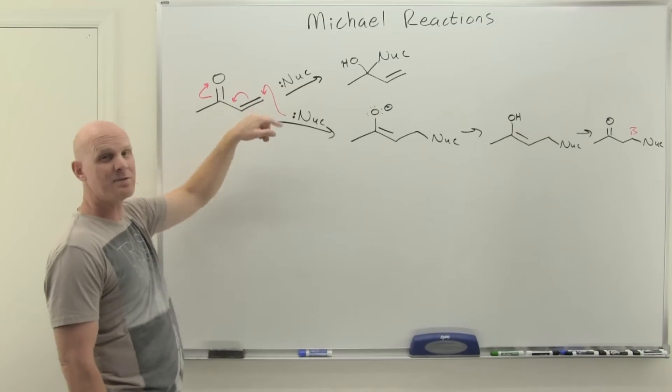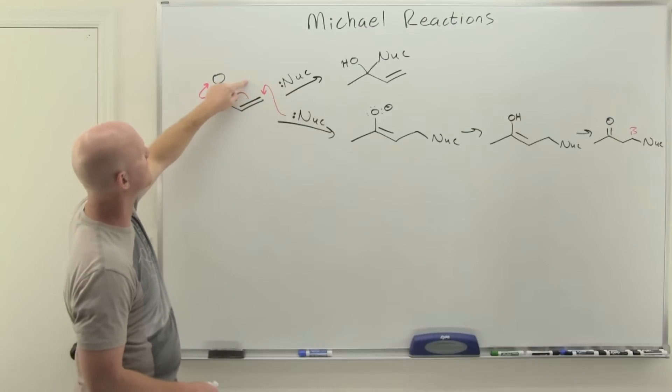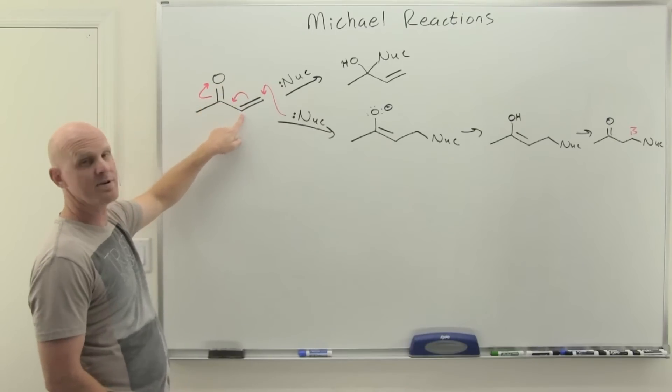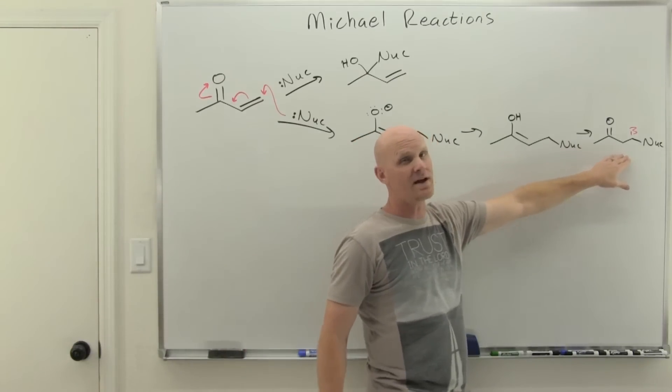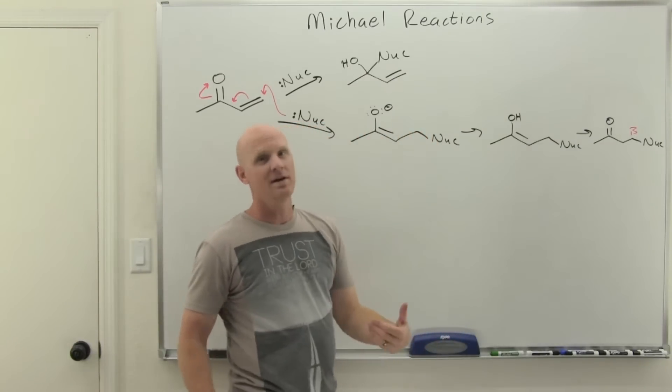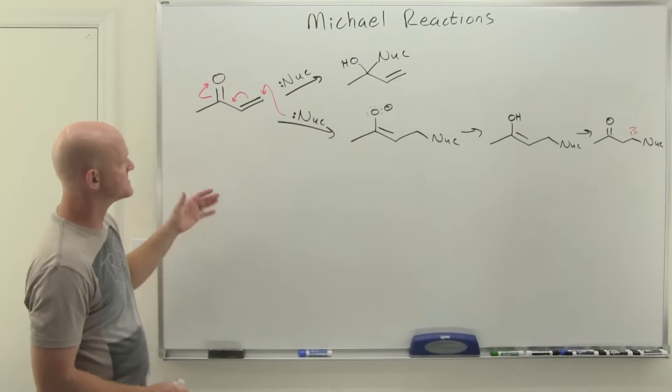You could have looked at it in the same light—it doesn't mechanistically occur this way, but you could have just attacked right here at this carbon, kicked these electrons over to this carbon, and then had that carbon get protonated. It's mechanistically not how it happens, but it's a quick way to predict your product.